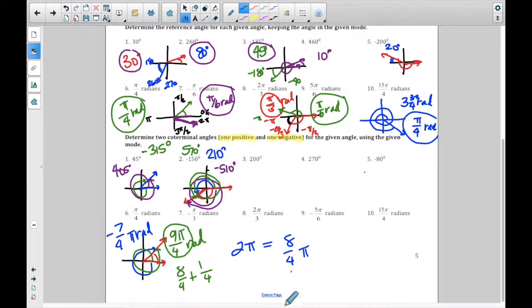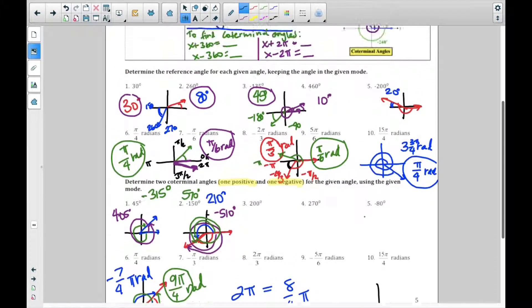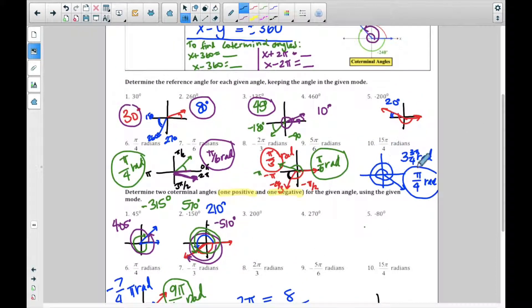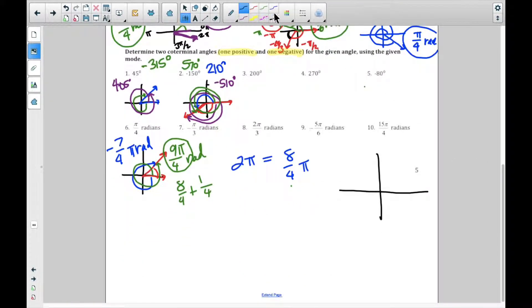I want to look at number 10 because on number 10, your crazy friend gets to start. I don't know who chose that person to start, but they get to start. How far do they go? 15 over 4 π. It seems like we did that a second ago. 15 over 4 π was 3 and 3 fourths π. All right, so here goes your friend. They're crazy. They go 1π, 2π, 3π, and 3 fourths of a π. They went that whole way. This is 15π over 4 radians.